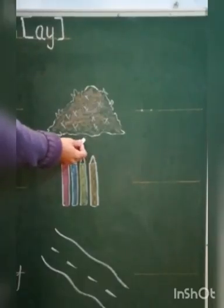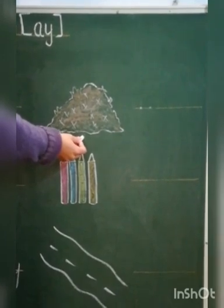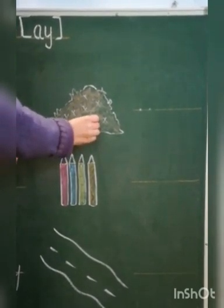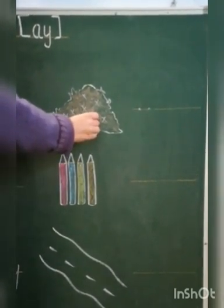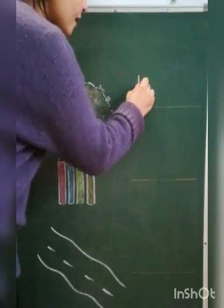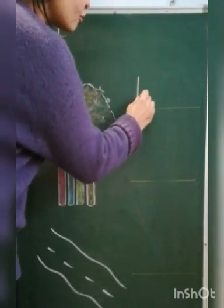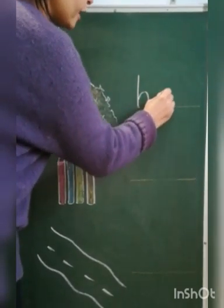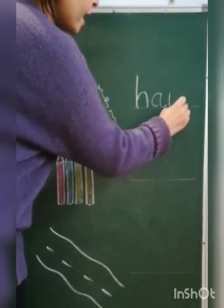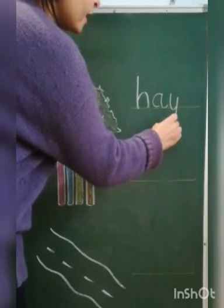Our next picture is hay. Which picture is this? Hay. And how do we write hay? H, A, Y. Hay.